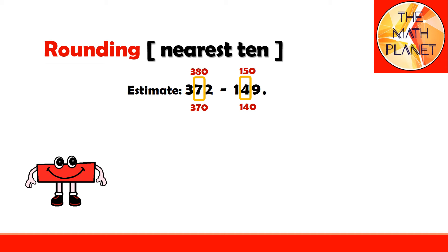So 372 is closer to my lower benchmark, so I will round 372 to 370, while 149 is closer to 150, so I will round it up to 150. Now, the estimate difference will be 370 minus 150 equals 220.